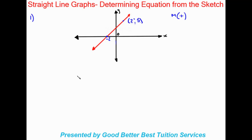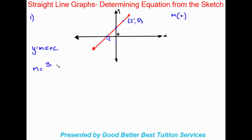The first step when we determine the equation from the sketch, when we're given two points, is to work out the gradient first. Remember our standard equation is y = mx + c. We want to work out that gradient because we can't determine c — the y-intercept — right now. Gradient m is equal to y₂ minus y₁ over x₂ minus x₁, which is our change in y over change in x.